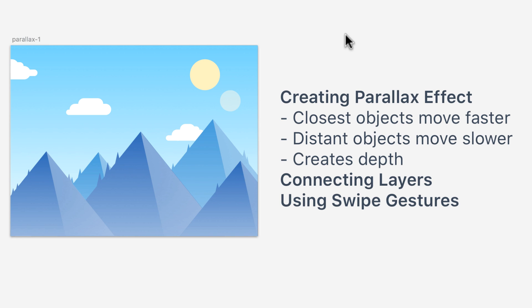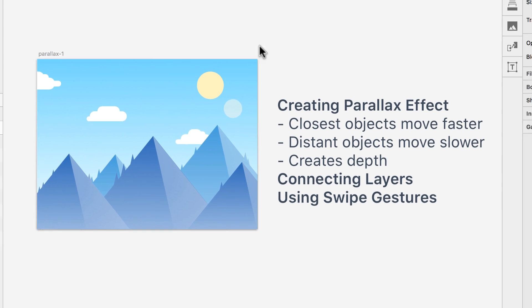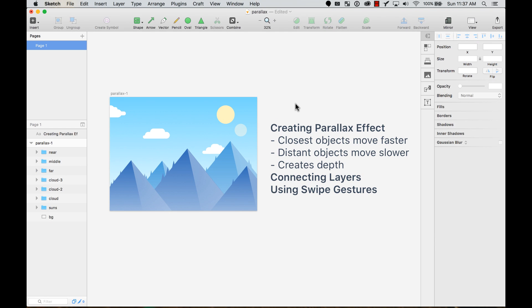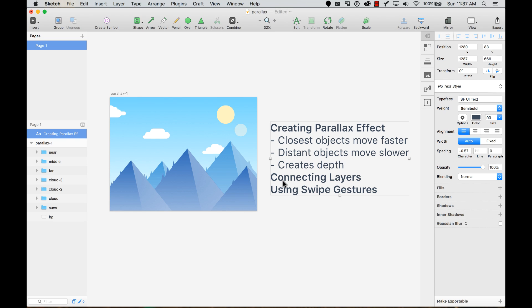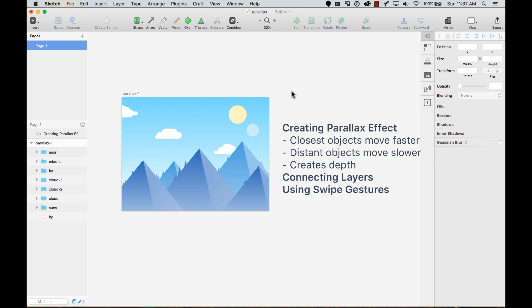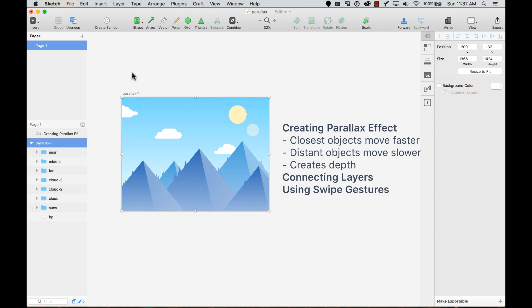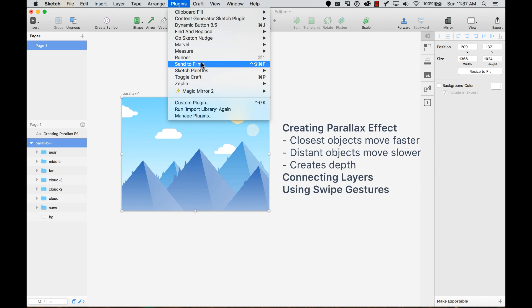You're probably familiar with this effect if you're in a car and look through the window — the mountains far away seem like they're not moving, while the cars or houses closer to you move really fast. So let's create that effect right now in Flinto. We're going to learn how to connect layers and use swipe gestures. Let's send this to Flinto using the Flinto plugin.